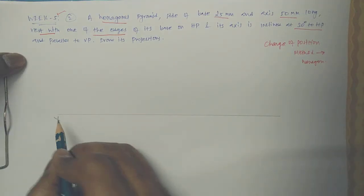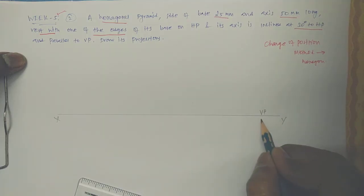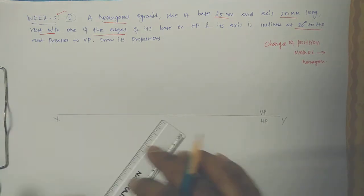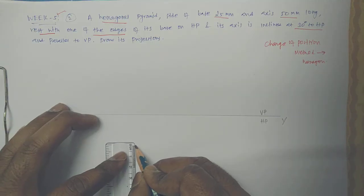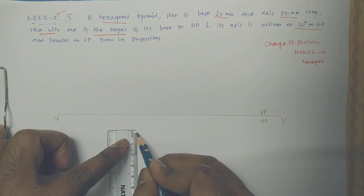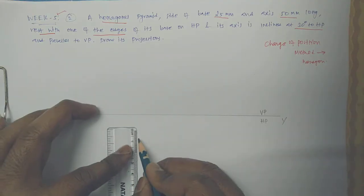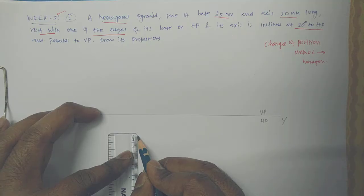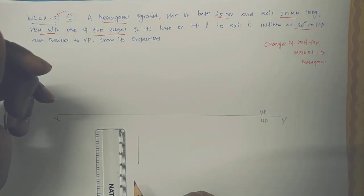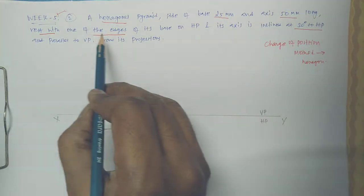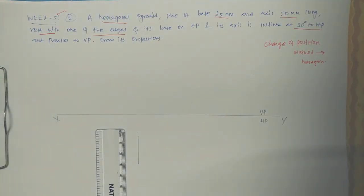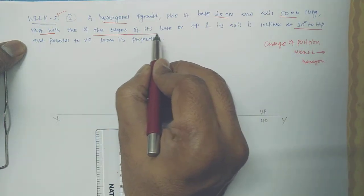Let this be XY — let this be VP and HP. Initially we need to draw the hexagon. The hexagon size is 25mm. Now the edge of its base — one of its edges is on HP. We need to understand: the edge of its base means the hexagon is standing on one of its base edges.